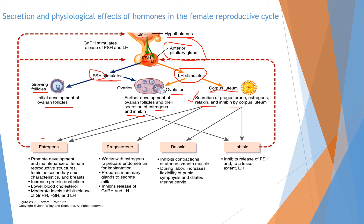Estrogen promotes the development and maintenance of female reproductive structures, feminine secondary sex characteristics, and breast development. It increases protein anabolism, lowers blood cholesterol, and at moderate levels inhibits the release of GnRH, FSH, and LH.